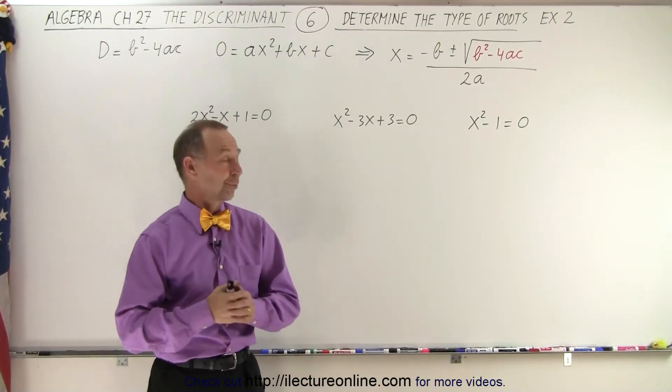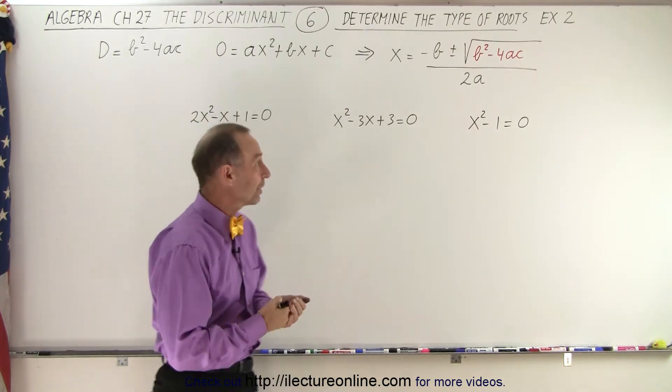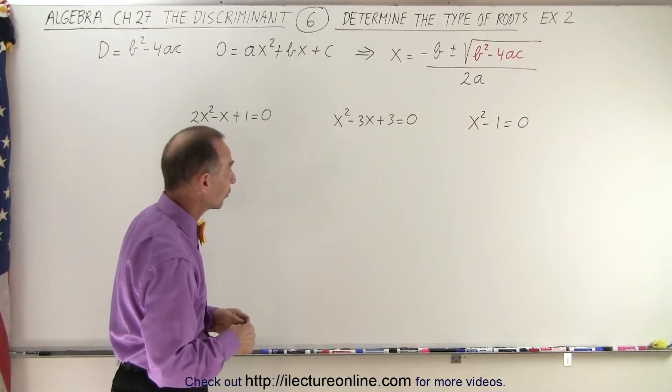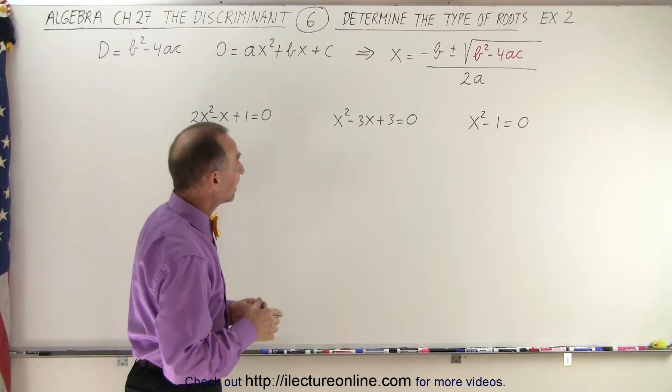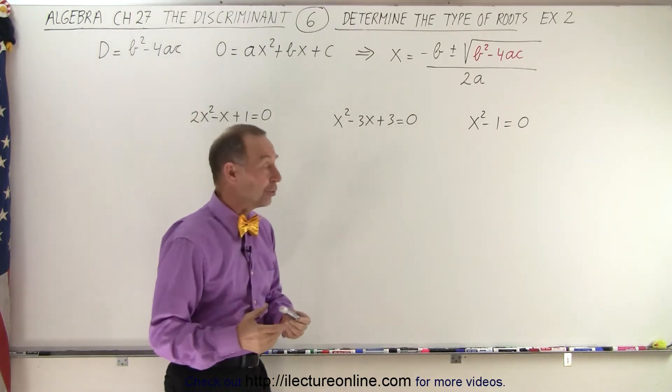Welcome to our lecture online. Here are three more examples for us to figure out what kind of roots we're going to get using these three equations. We need to calculate the discriminant. The discriminant is defined as b squared minus 4ac. So let's go ahead and do that.